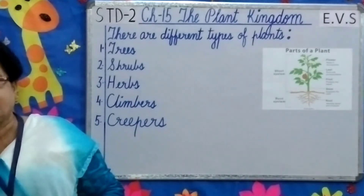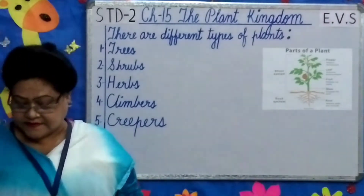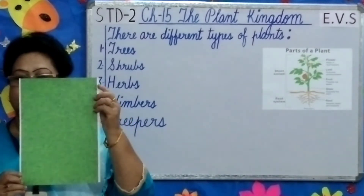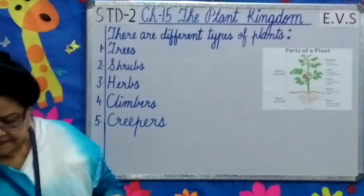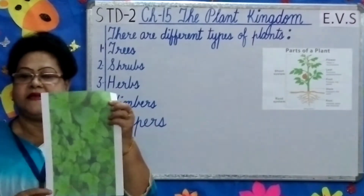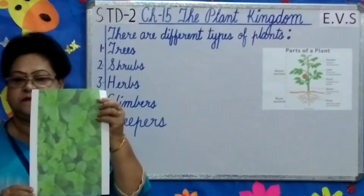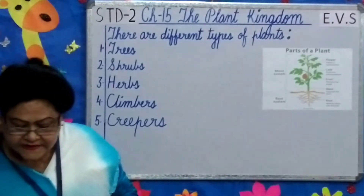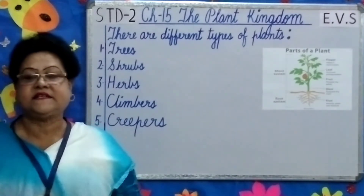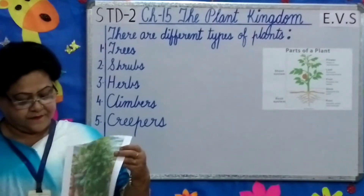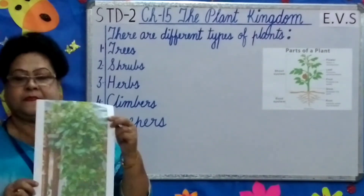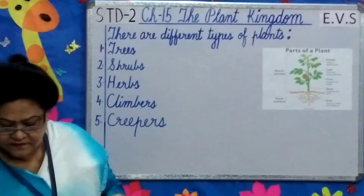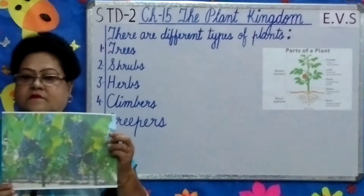Herbs are very small plants, such as grass and mint. Climbers have weak stems and need support to climb, such as the money plant and grapevine.